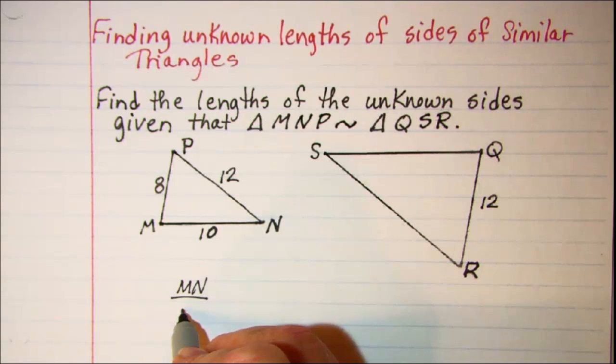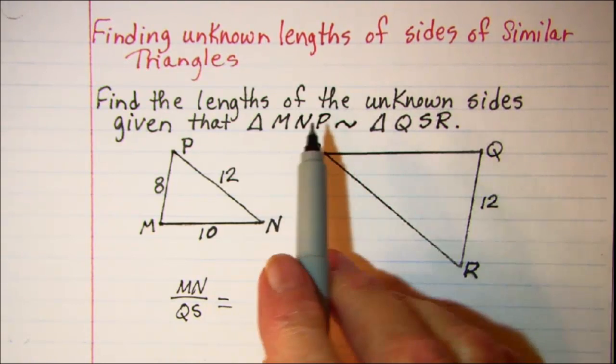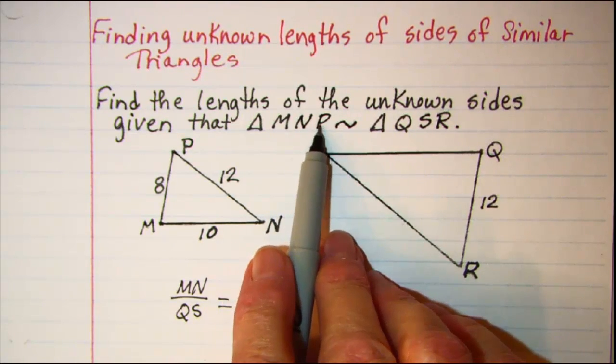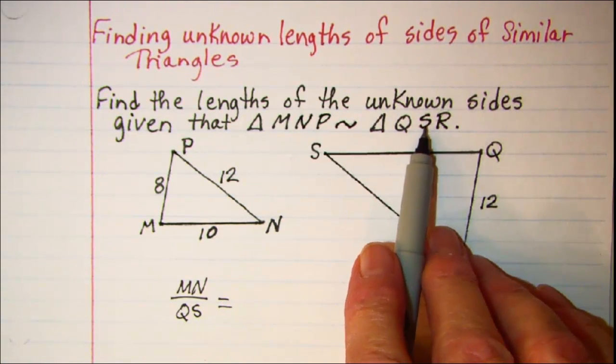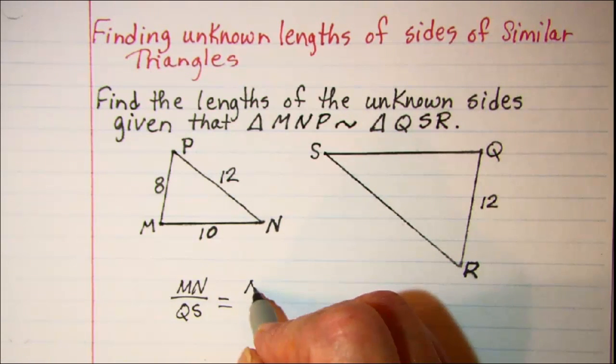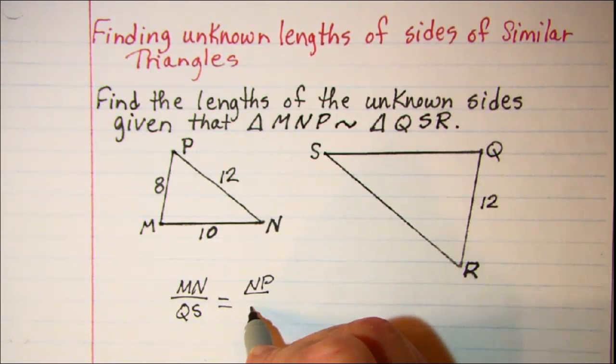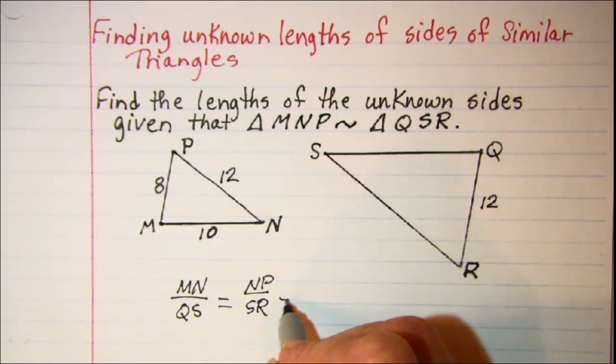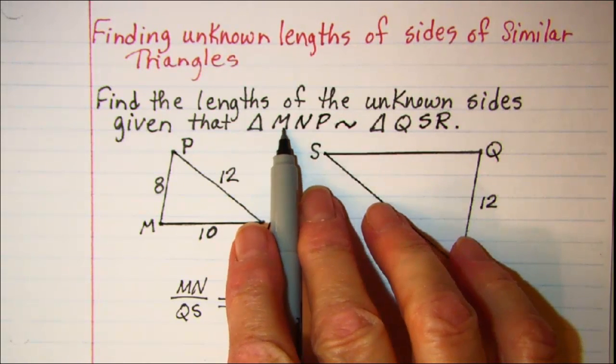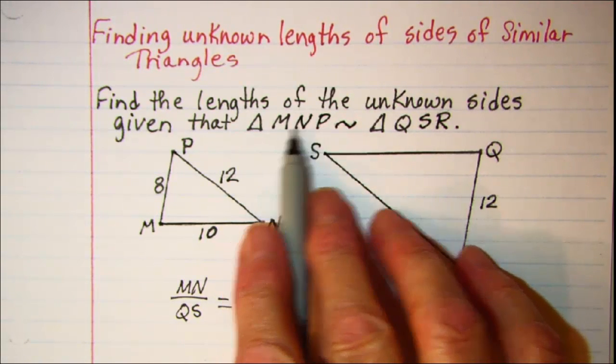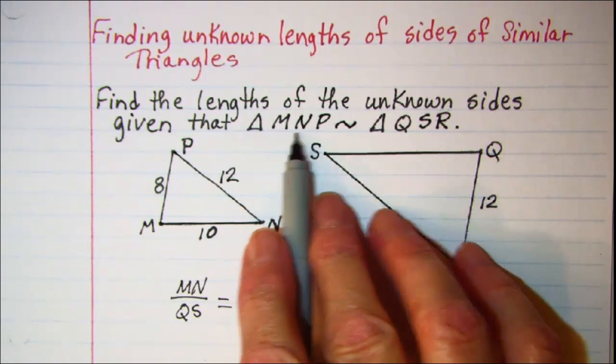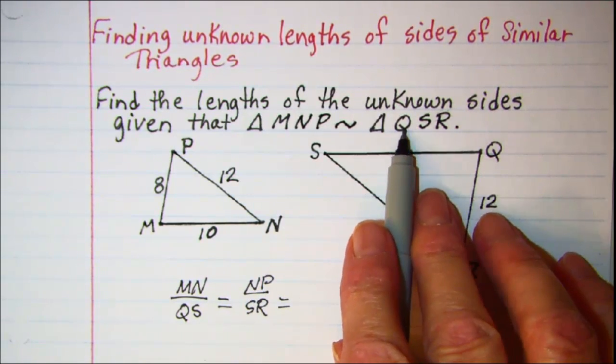So MN is to QS, and then NP is in a ratio to SR, and then MP, which is the first and last letter, MP is to QR.